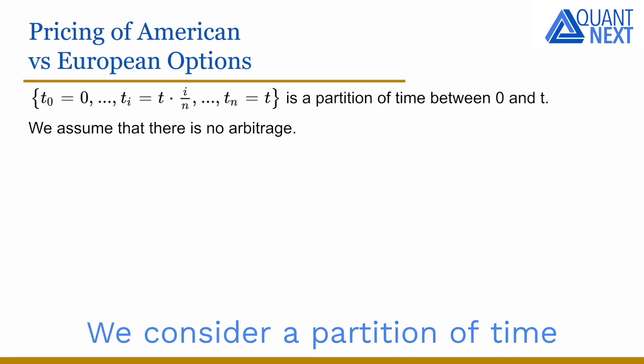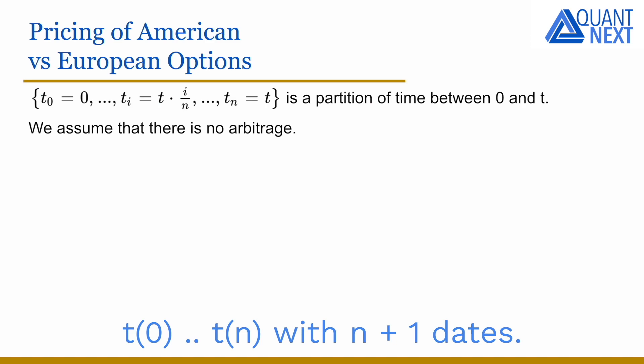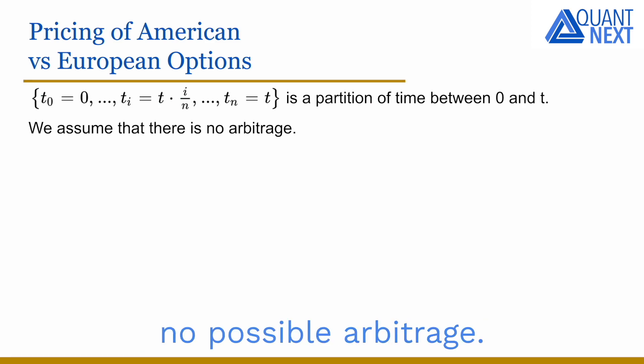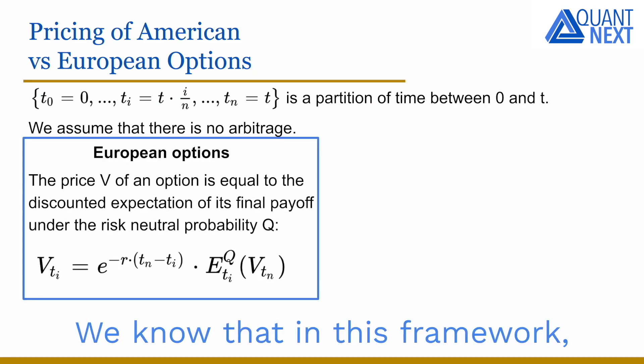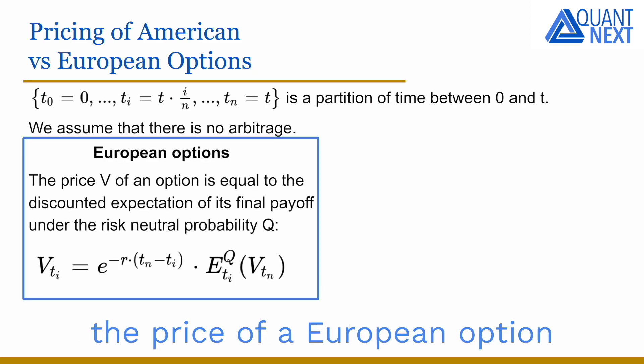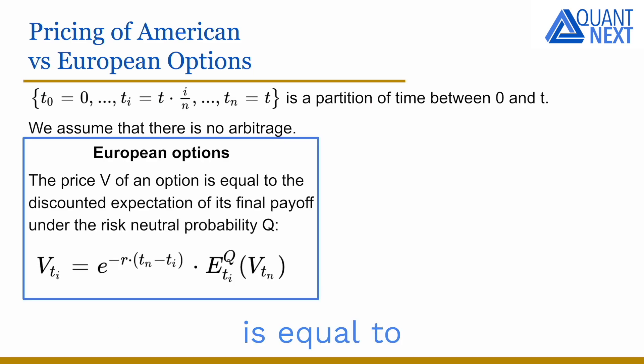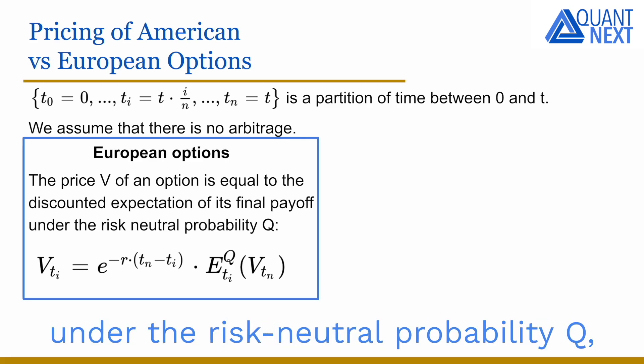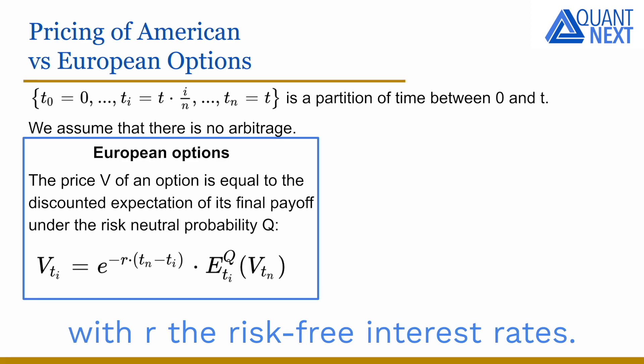We consider a partition of time T0 to Tn with n plus 1 dates. We assume that there is no possible arbitrage. We know that in this framework the price of a European option is equal to the discounted expectation of its final payoff under the risk-neutral probability Q, with R the risk-free interest rate.